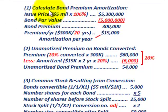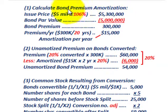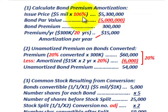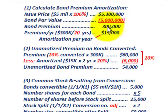First, we have to calculate the bond premium that has to be amortized. The issue price: we had $5 million par bonds issued at 106% of par, so that equates to $5,300,000. The par value was $5 million, so the difference gives us a bond premium of $300,000. Our amortization per year: we had 20-year bonds, so we divide $300,000 by 20 and get $15,000 amortization per year.